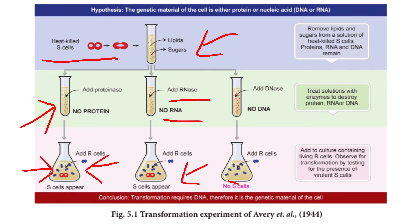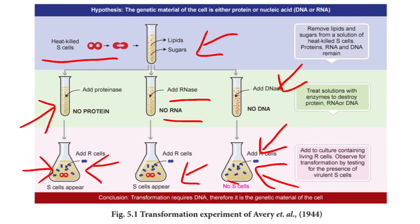With RNA removed by RNase, the S type still appeared. In the last test tube, DNase was added, removing the DNA. After DNA removal and mixing with R cells, no S-type cells were formed.